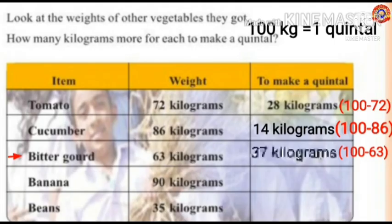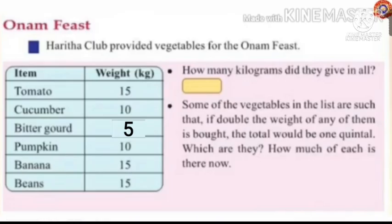Students, next you have to find how many more kilograms banana and beans need to make a quintal. You have to do this in your textbook. Continue this activity. Next: Onam Feast. The Harita Club provided the following vegetables for the Onam feast — tomato: 15 kilograms, cucumber: 10 kilograms.